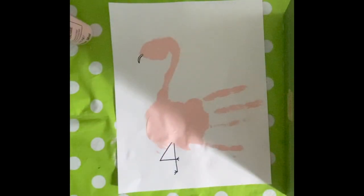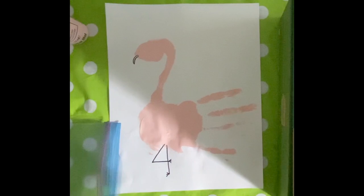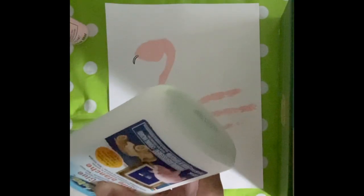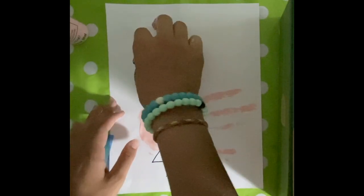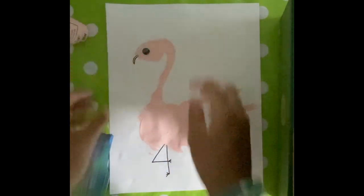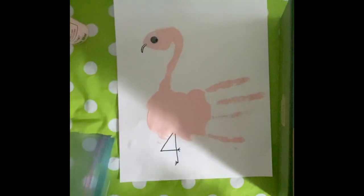Then grab your googly eyes and glue one large eye onto the head. And there you have a completed flamingo finger painting. I hope you enjoyed and thanks for watching.